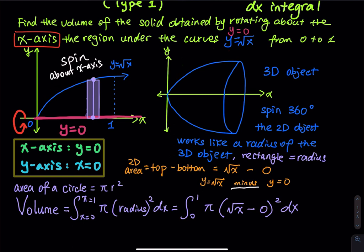To make this three-dimensional, you use an integral. The volume equals the integral from 0 to 1 of π r² dx, where r is the top curve minus the bottom curve: √x minus 0. The integral from 0 to 1 covers the entire region — each thin rectangle spun 360° contributes π r², and integrating sums them all up to give the volume of the 3D object.